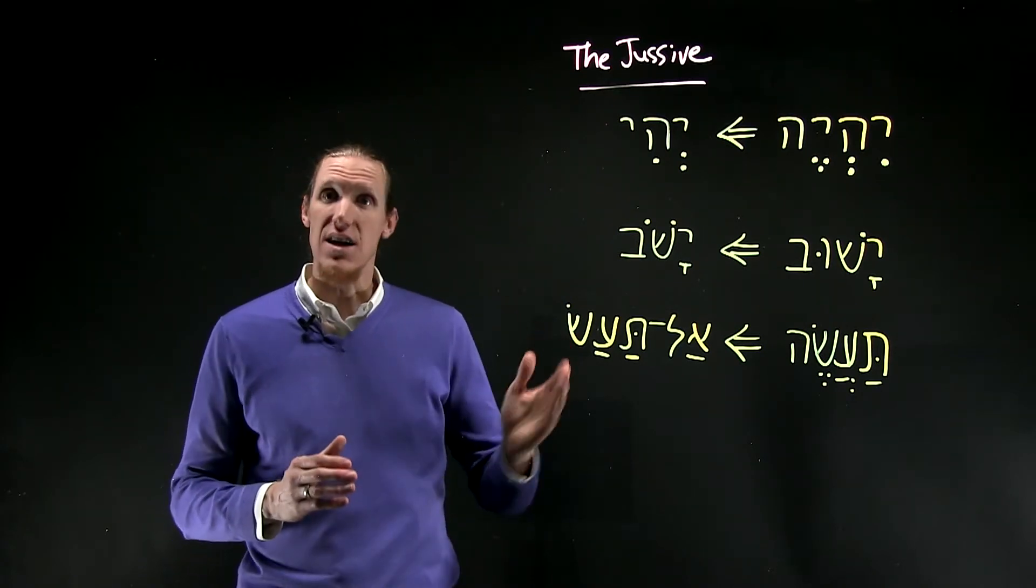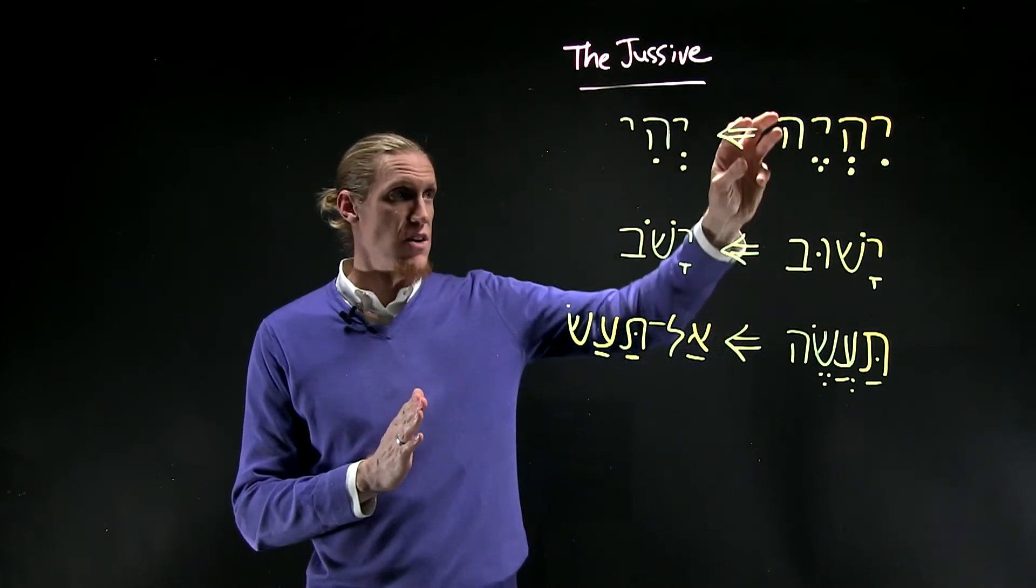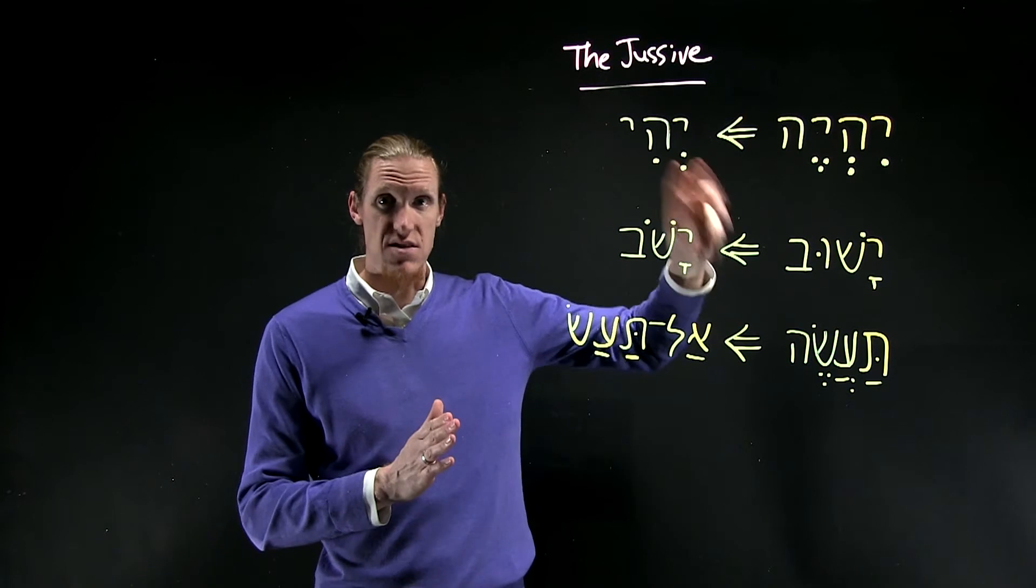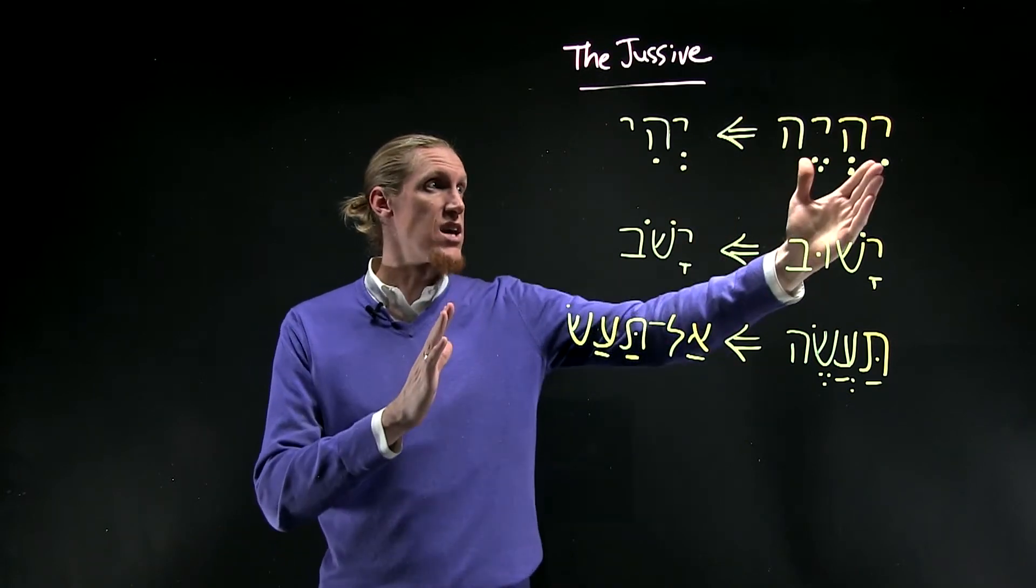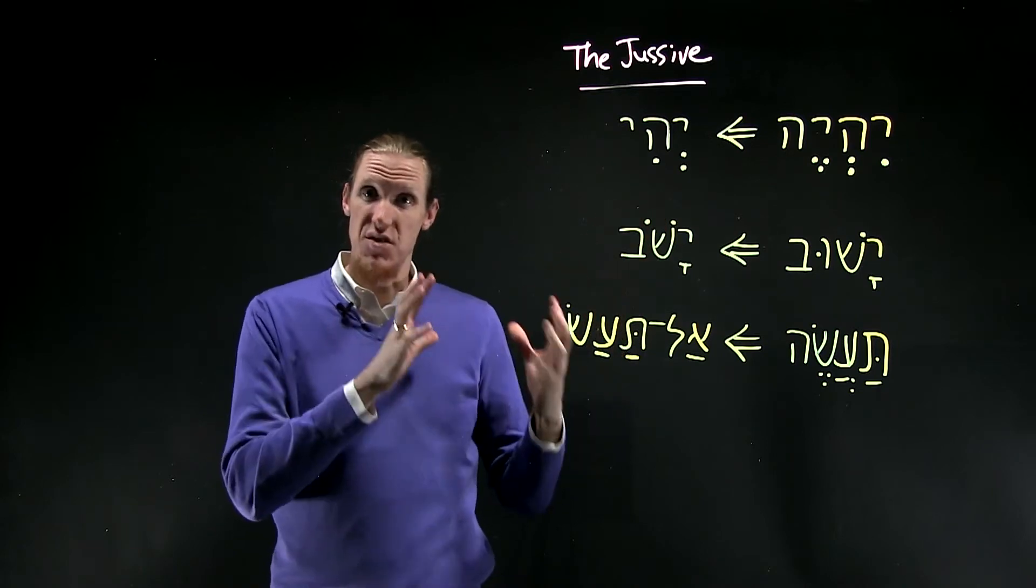So you can see that the he on the end has fallen off, has been removed, and the hirik on the beginning is shortened into a sheva. So this is a very shortened form.